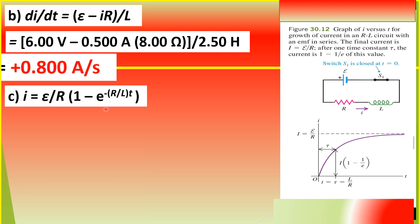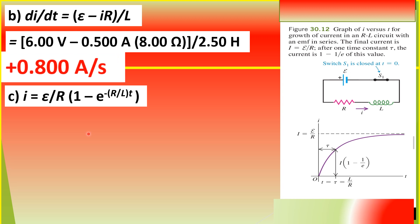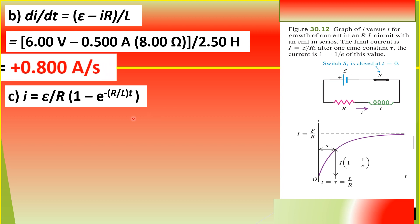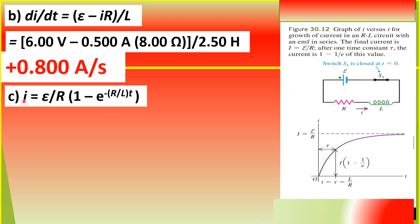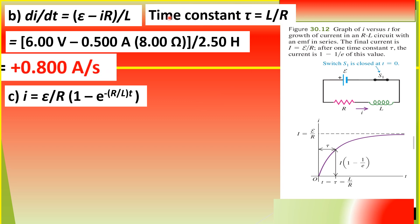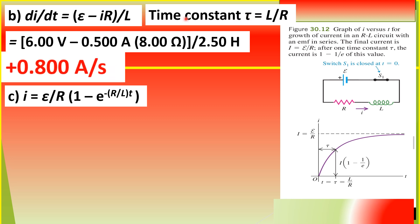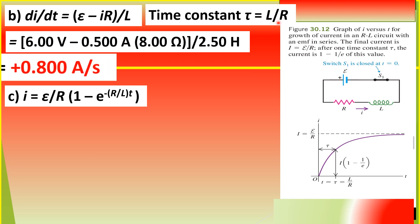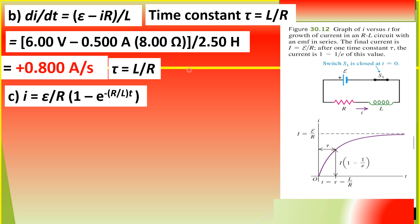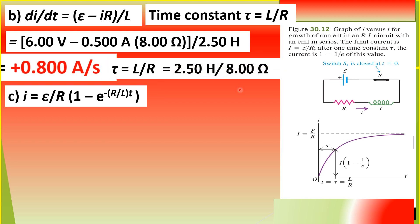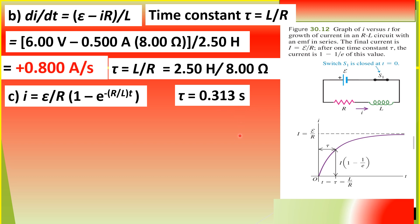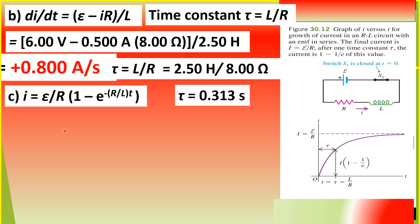For question C, we are asked to find the amount of current after the switch has been closed, at an instant T equal to 0.250 seconds. We use the current formula, but first we define the time constant tau — the Greek letter tau — which is the inductance L divided by the resistance R. In this problem, tau equals 2.50 henry divided by 8.00 ohms, so the time constant tau equals 0.313 seconds.